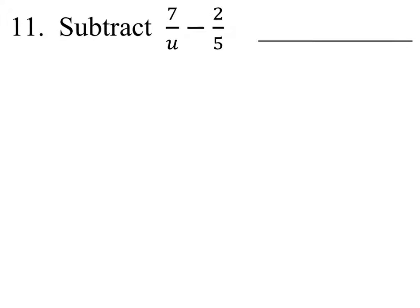Alright, this one's great because they have a U in the denominator. We just need common denominators before we can add or subtract. So, we need common factors for both of these or common multiples.